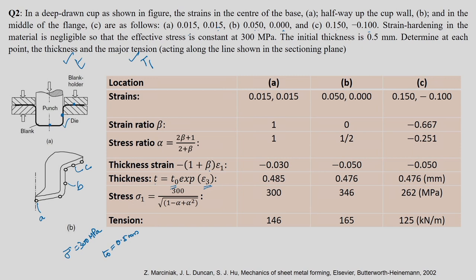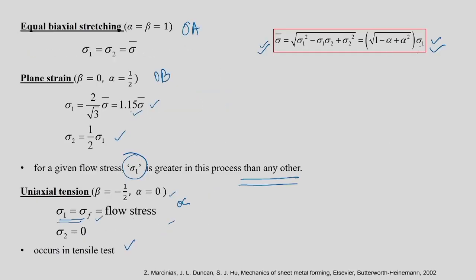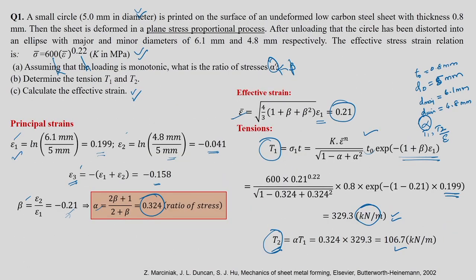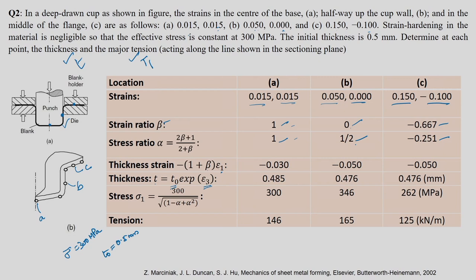Beta for each location: for A, beta equals 0.015/0.015 equals 1; for B, beta equals 0/0.05 equals 0; for C, beta equals minus 0.1/0.15 equals minus 0.667. From beta: for A (beta=1), alpha equals 1 — equibiaxial; for B (beta=0), alpha equals half — plane strain; for C, alpha equals 0.251. Substituting into epsilon_3 and then T gives new thicknesses of 0.485, 0.456, and 0.476 mm at A, B, and C respectively.